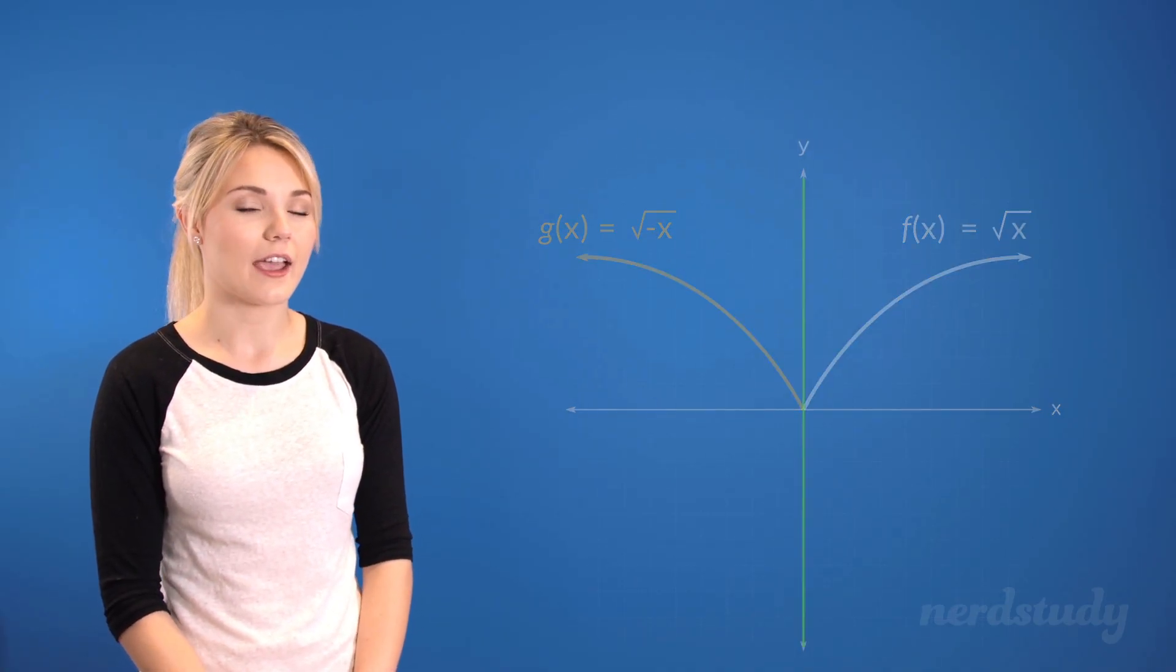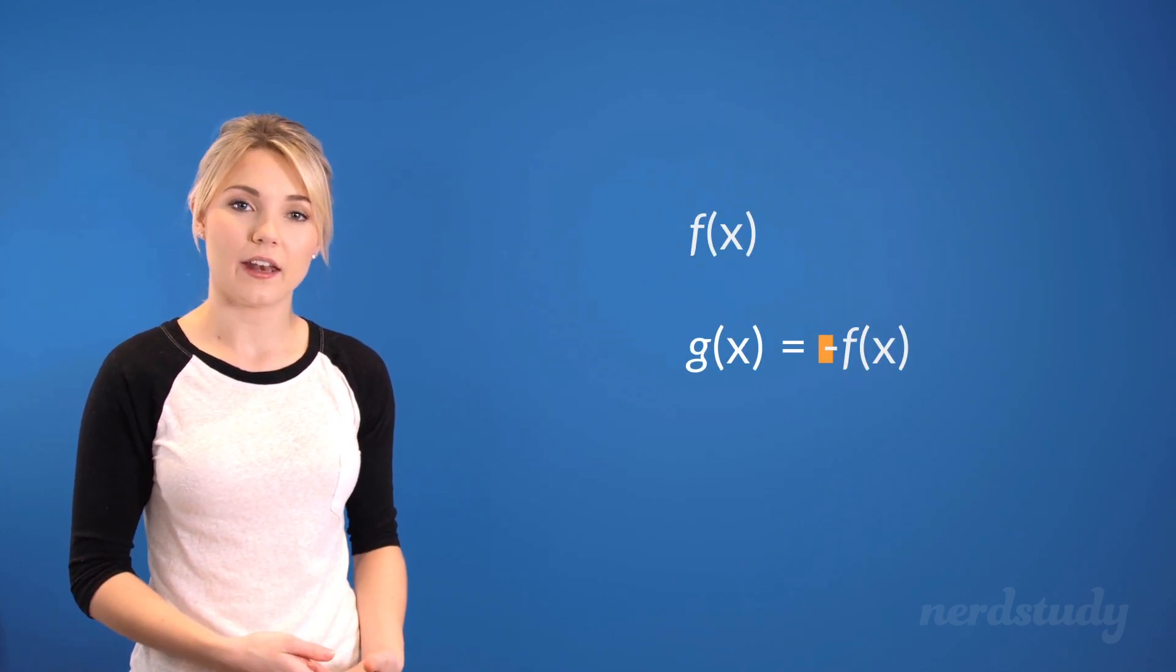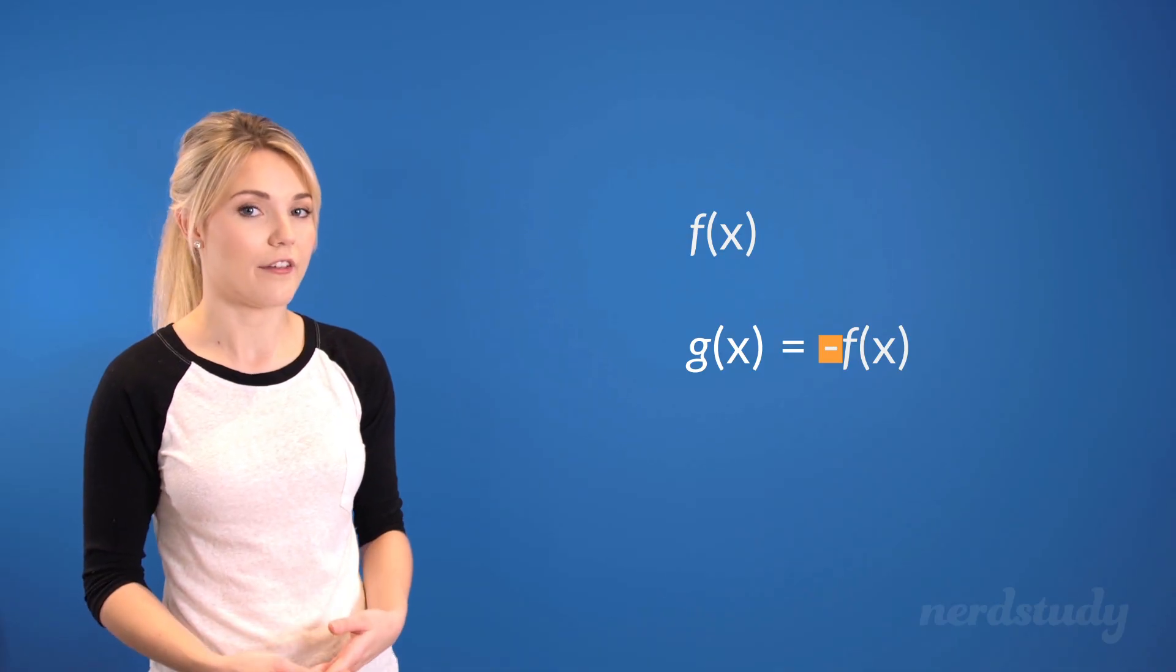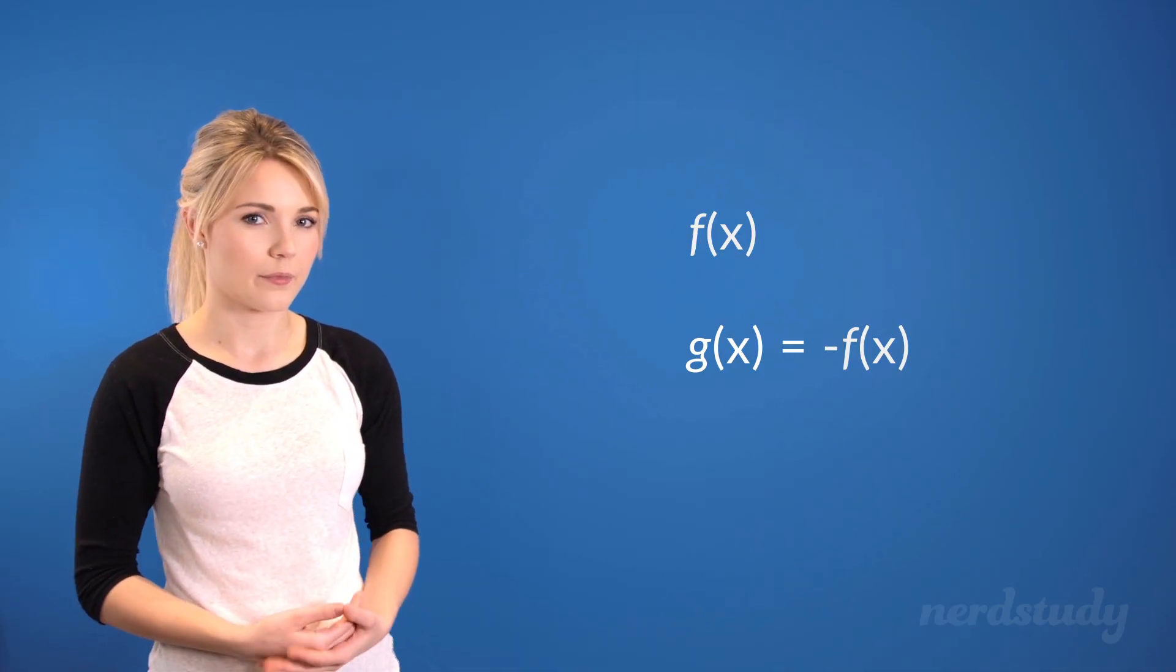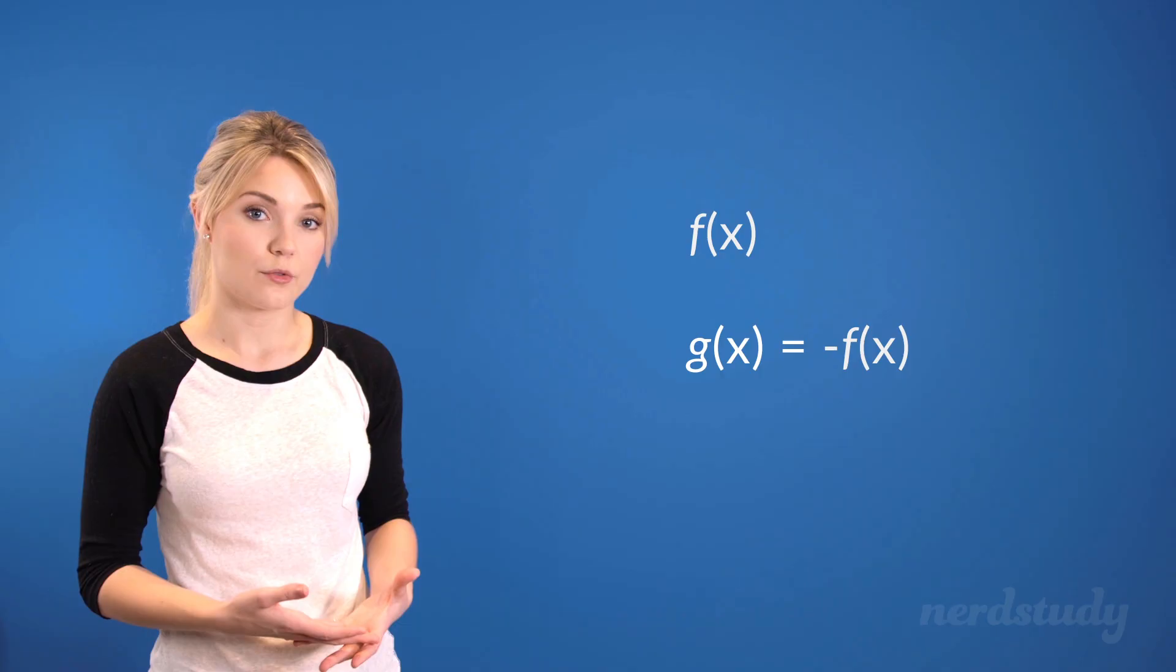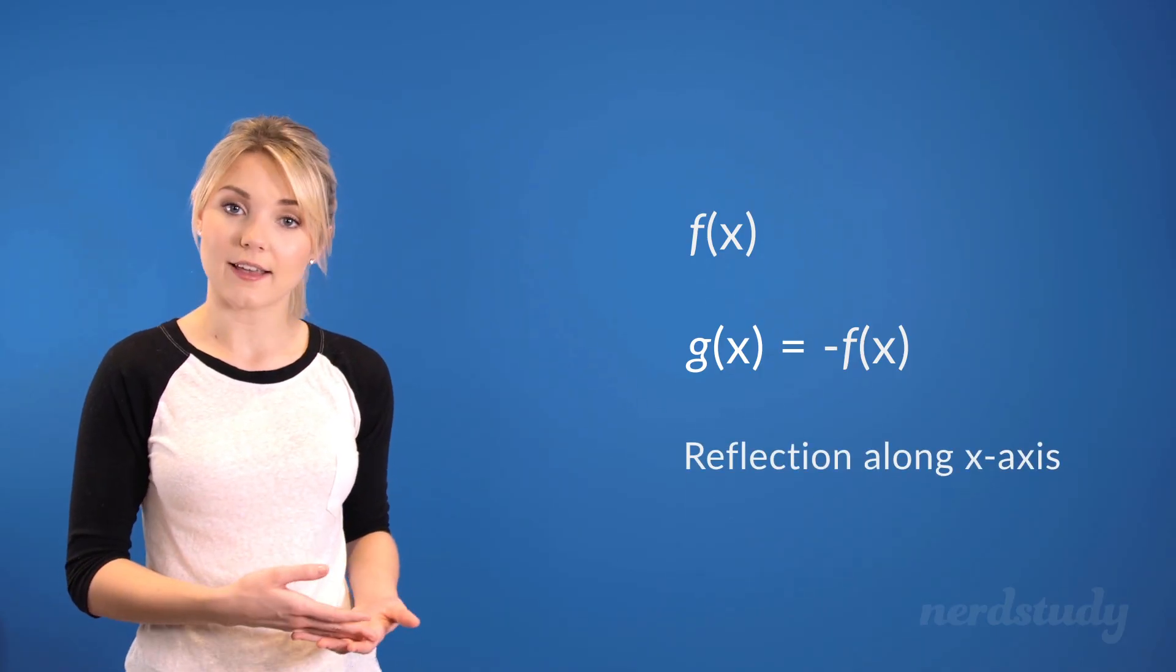Now, let's take a look at a different transformation. What would happen if we applied the negative sign on the outside of f(x), like so? Well then, in this case, we would see a reflection along the x-axis instead.